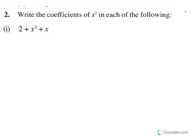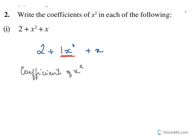Write the coefficients of x² in each of the following. For 2 + x² + x, I need to find the coefficient of x². There is no number before x², which means there must be a 1. So the coefficient of x² in 2 + x² + x is 1.